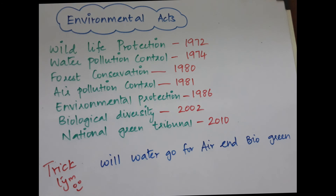The mnemonic is: WILL WATER GO FOR AIR AND BIO GREEN. WILL is for Wildlife Protection Act, WATER is for Water Pollution Act, GO is implied, FOR is for Forest Conservation Act, AIR is for Air Pollution Control Act, AND is for Environmental Protection Act, BIO is for Biological Diversity Act, and GREEN is for National Green Tribunal Act.